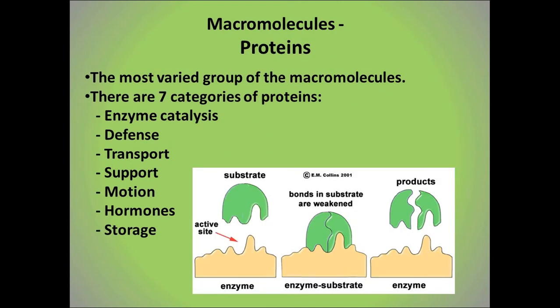The most varied group of macromolecules are the proteins. There are seven categories, and we will go through each of them. The first category are the enzymes — they increase or decrease the rate of a chemical reaction, which is called catalysis. We have an entire chapter on enzymes, so here's one example: when we eat food, hydrochloric acid is released into the stomach, but breaking down food particles with just hydrochloric acid is very slow — so slow we would actually starve. What really happens is the hydrochloric acid activates an enzyme called pepsin, which increases digestion and brings glucose to us fast enough to immediately access that energy.